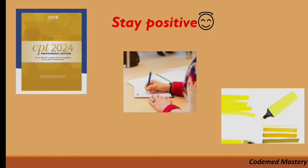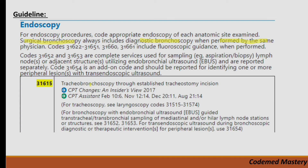Let's start with the first guideline: endoscopy. For endoscopy procedures, code the appropriate endoscopy of each anatomic site. Surgical bronchoscopy always includes diagnostic bronchoscopy when performed by the same physician. Codes 31622 to 31651, 31660, and 31661 include fluoroscopic guidance when performed.